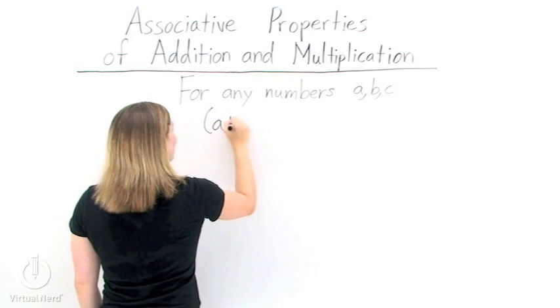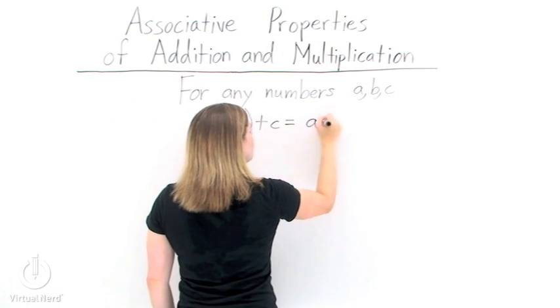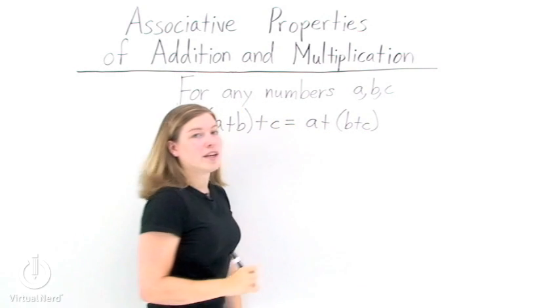If we add A and B together first and then add C to it, we can use the associative property of addition to regroup the terms and add B plus C first.